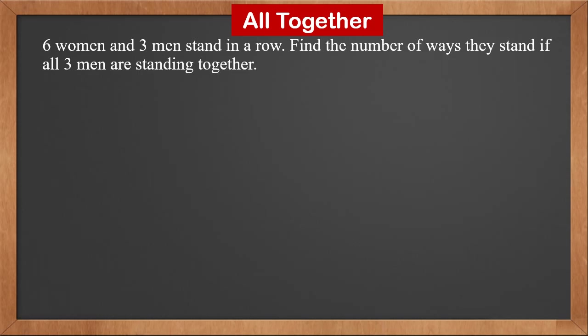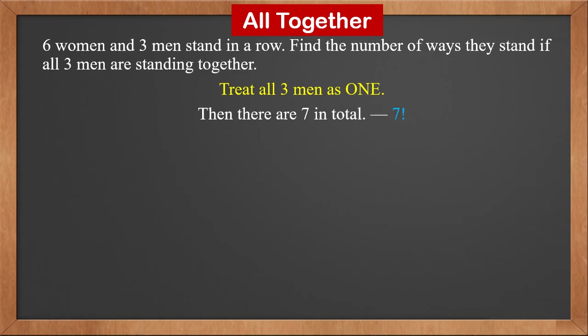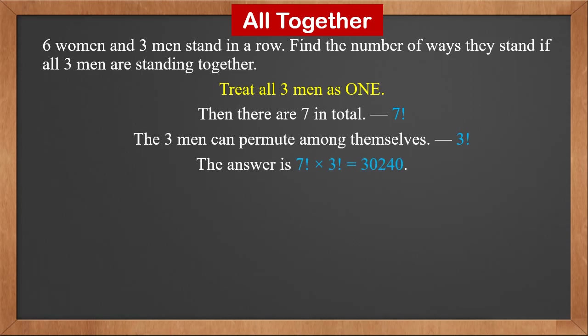Six women and three men stand in a row. Find the number of ways they can stand if all three men are standing together. When dealing with 'altogether' problems, we treat those items as one — so we treat all three men as one unit. Then there are seven items in total: that is 7!. Also, the three men can permute among themselves: that is 3!. So the answer is 7! × 3! = 30,240.